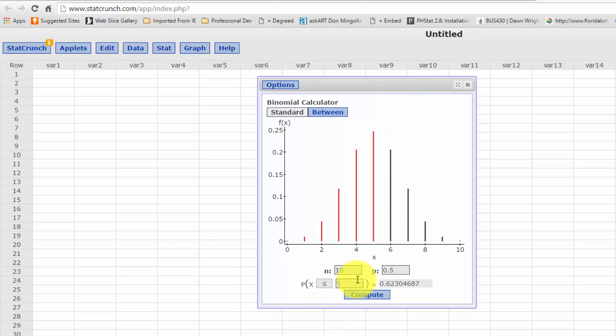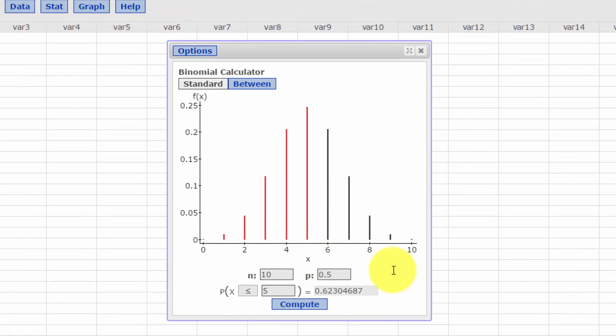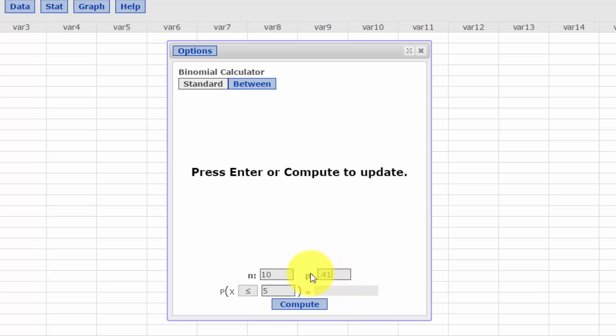I think we were looking at 10 students, but the probability or the proportion was 0.41.